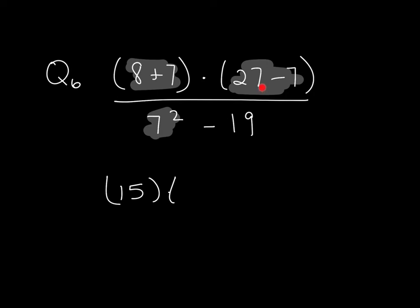And then 27 minus 7 is just going to leave me with 20. And in the denominator, that 7 squared becomes 49 minus 19.